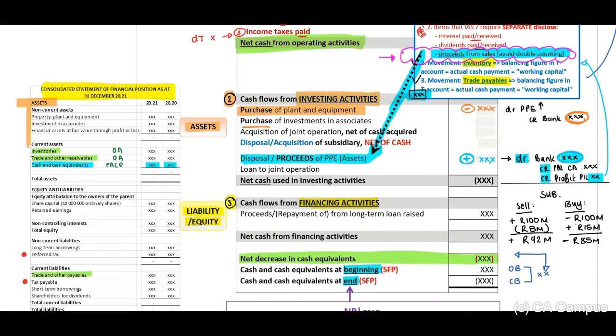Then I just want to highlight a very important section here. Disposal or acquisition of subsidiary net of cash. Now, why net of cash? If you think about disposal, we will receive. Therefore, this will be a positive inflow. If you think about acquisition, we buy, outflow of cash. But what does it mean, net of cash? Now, when you look at the right side, basic example here, just for explanation purposes.